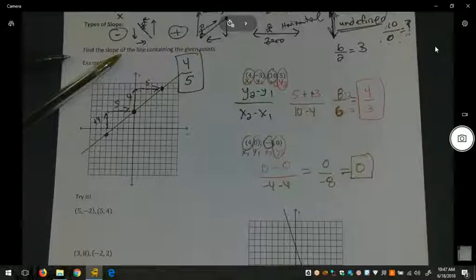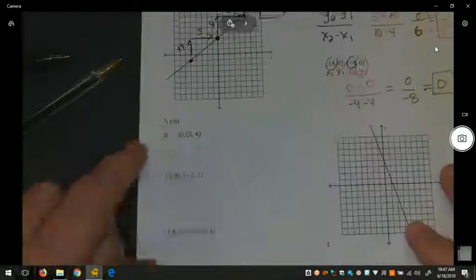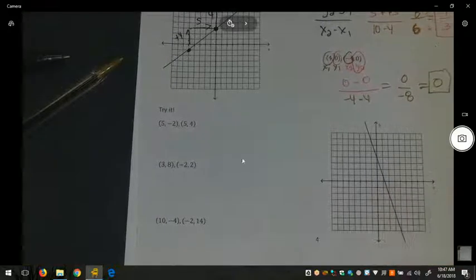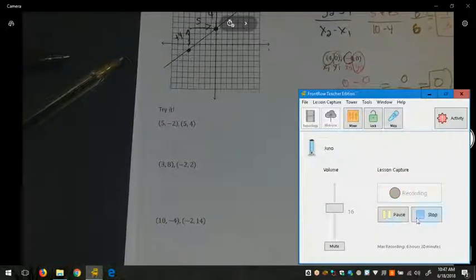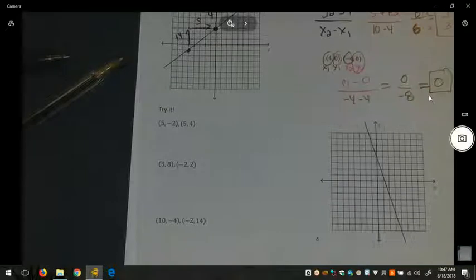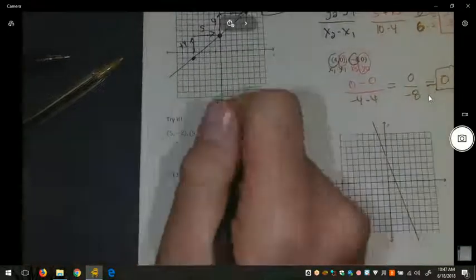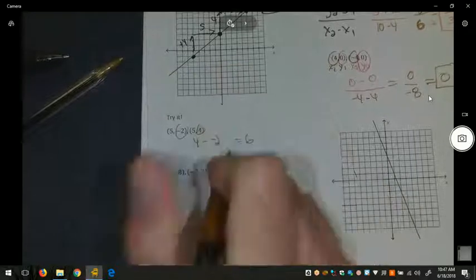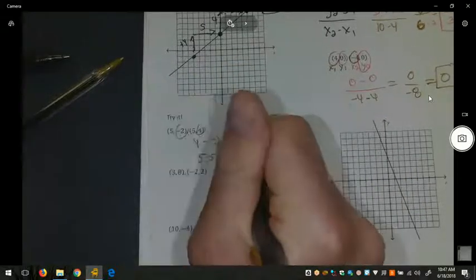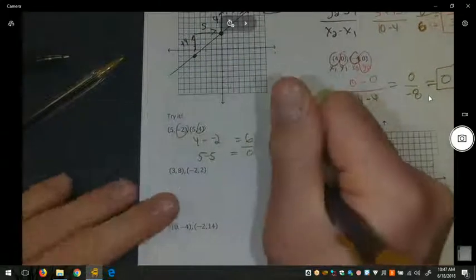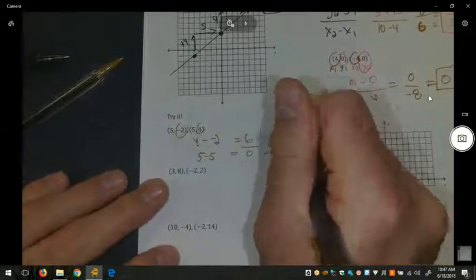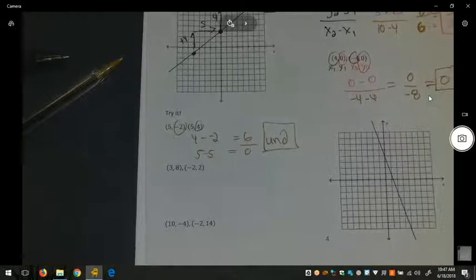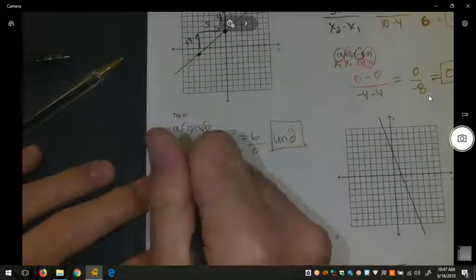Please try this. Pause the video and try this using the slope formula for these three and trying to find the slope from the graph for this one. In your first try it, you should have had four minus negative two to get positive six. Five minus five to give you zero. Since six is not divisible by zero, this slope is undefined. We would expect a vertical line when these points were graphed.